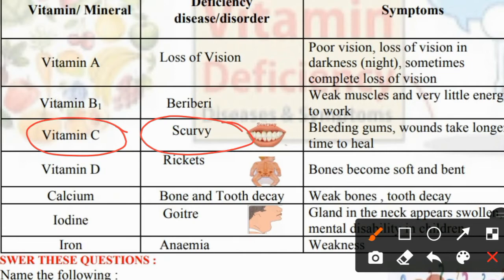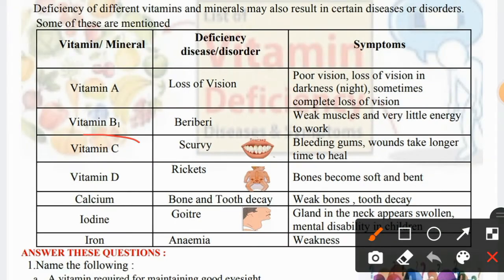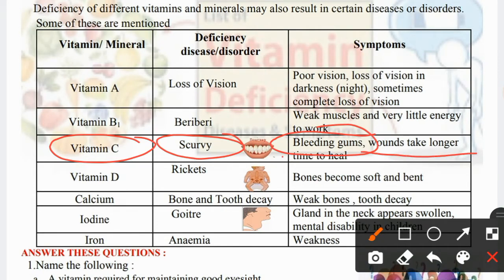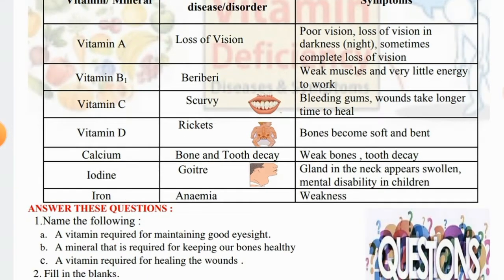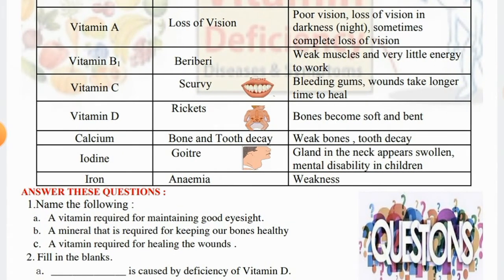Vitamin C — the disease is scurvy. Symptoms include bleeding gums, pain, and wounds that take a longer time to heal. Blood takes a lot of time to clot.